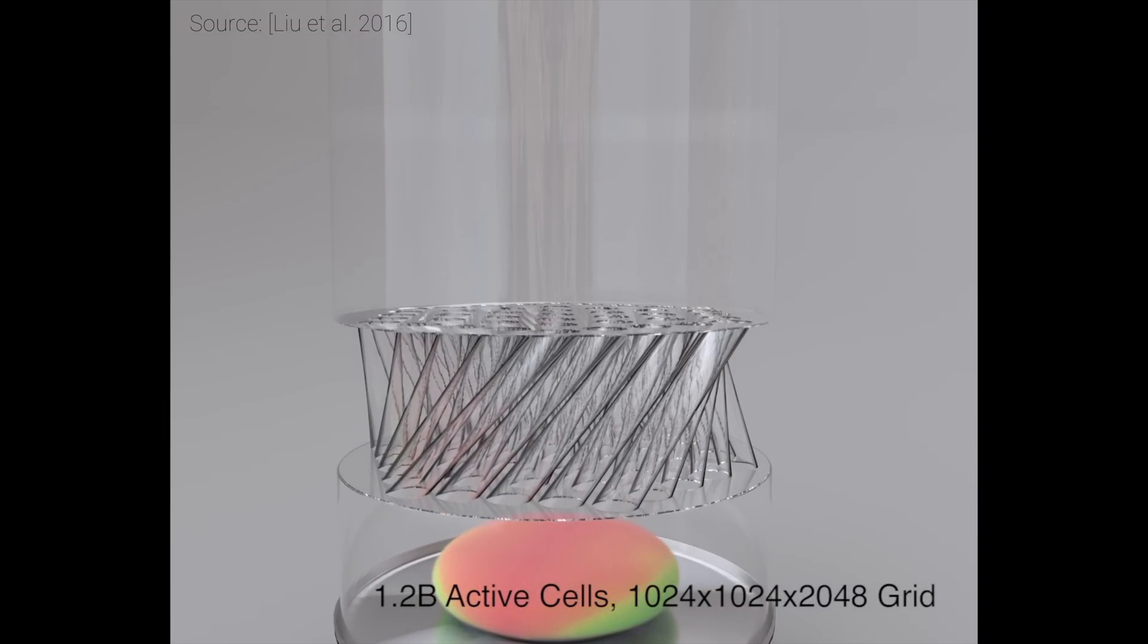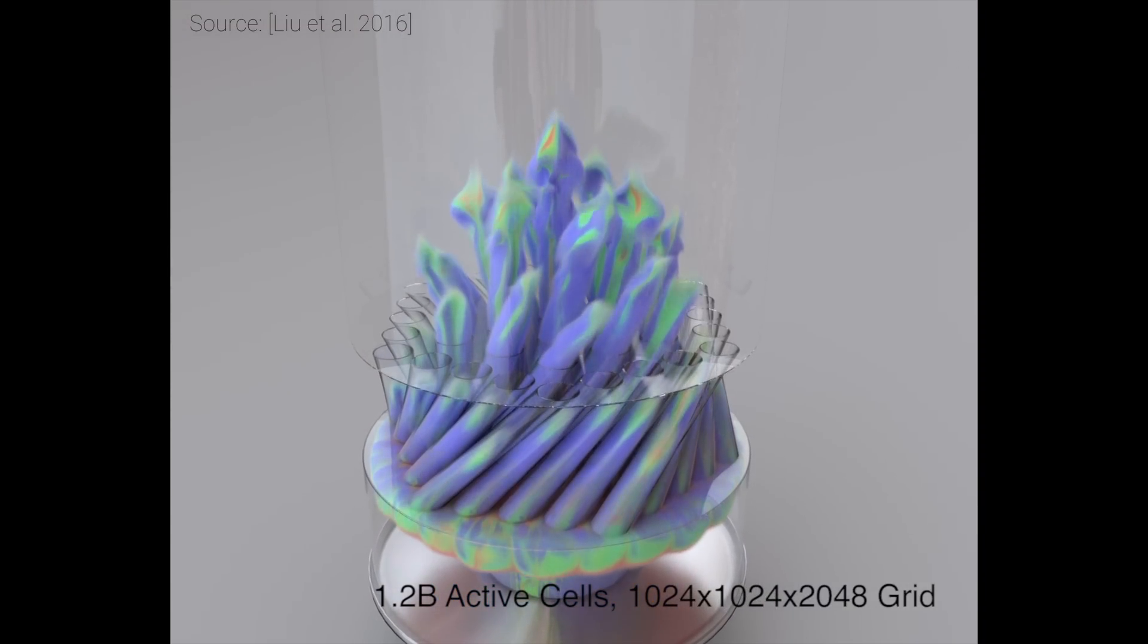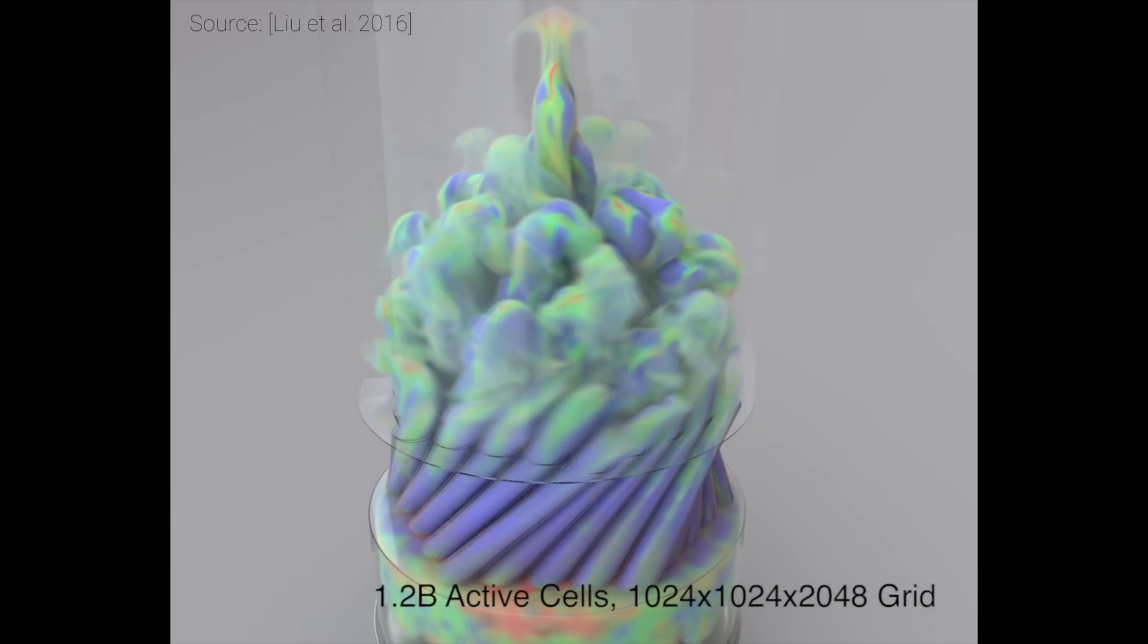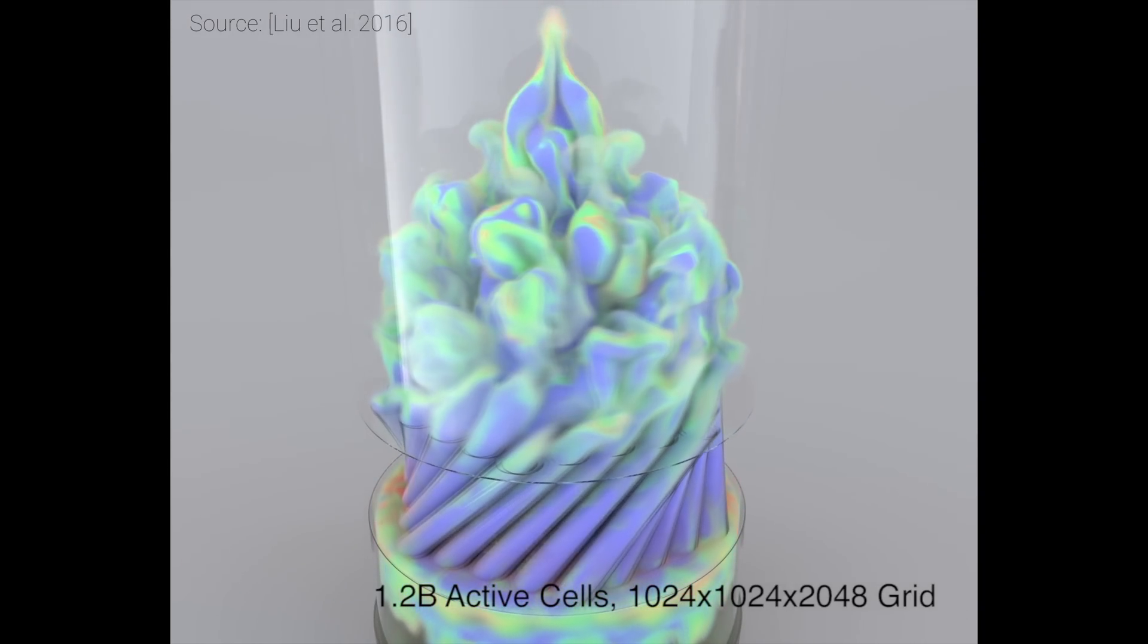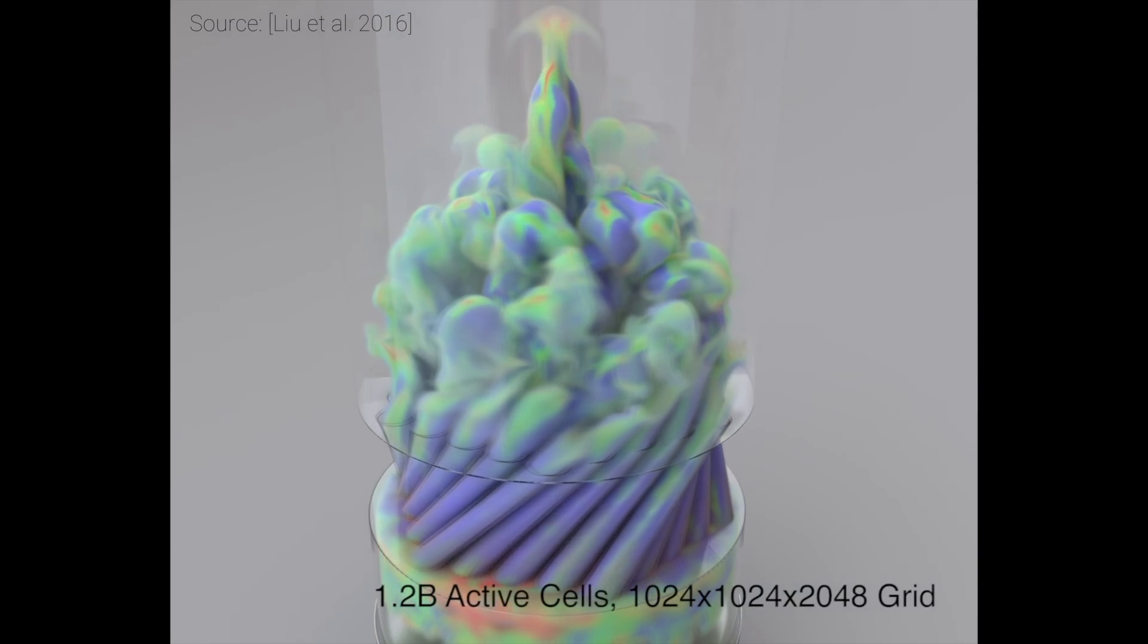Typically, the simulation in the individual subdomains are computed on one or more separate graphical cards and the administration of the intersecting interface takes place on the processor.